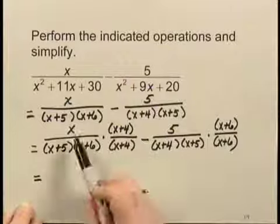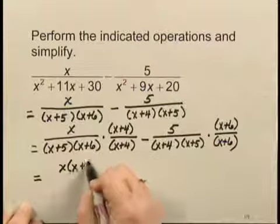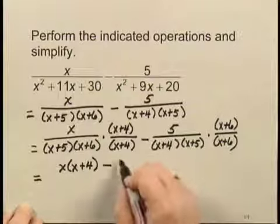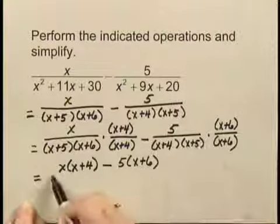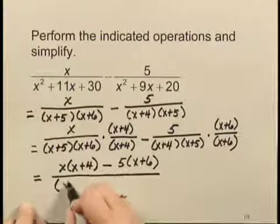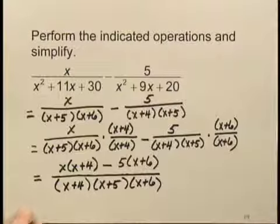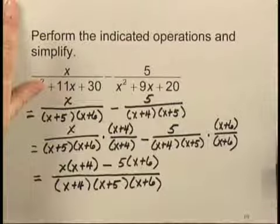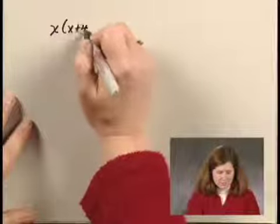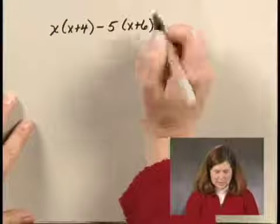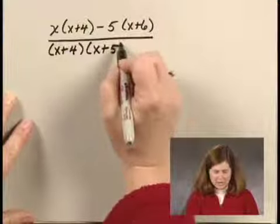Performing those multiplications, I have x times x plus 4 minus 5 times x plus 6. And since I have a common denominator, I can write that all over the common denominator, x plus 4 times x plus 5 times x plus 6. Transferring that to a new line: x times x plus 4 minus 5 times x plus 6, all over x plus 4 times x plus 5 times x plus 6.